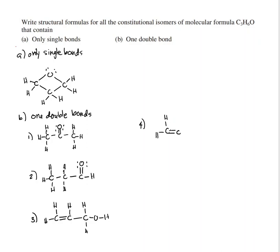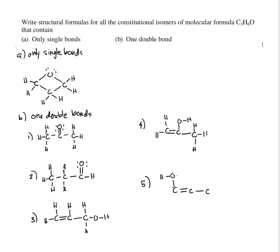The fourth structure has C=C with two H's there, then an oxygen, and three H's at the carbon on the right — that is also C3H6O. The fifth structure also has C=C with an OH group attached, and two lone pairs on that oxygen.